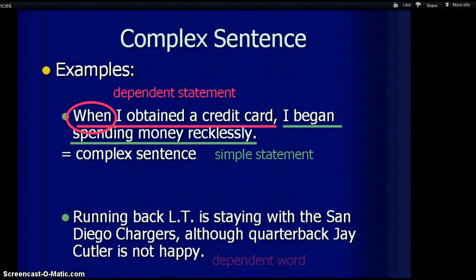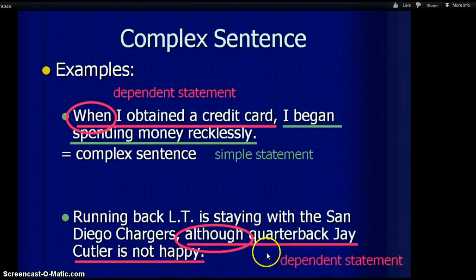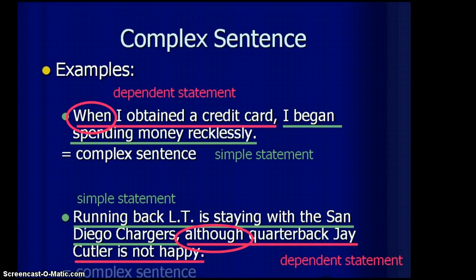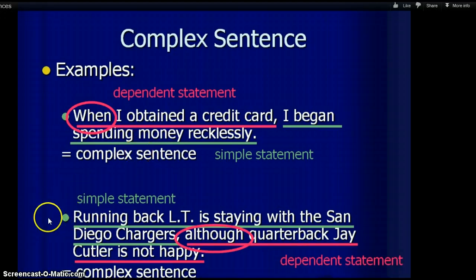Here's another example. You've got although as your dependent word. And this is the dependent statement. Although quarterback Jay Cutler is not happy, that's your dependent statement. And then at the beginning, you've got running back LT is staying with the San Diego Chargers. That's your simple sentence independent clause. And it doesn't matter what order. You've got them in different orders. Here we have the dependent statement first and the independent last. And in this example, you've got the independent or simple statement first and your dependent last. But both of these equal a complex sentence.